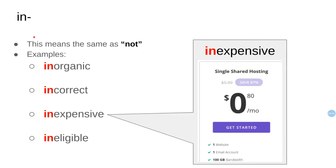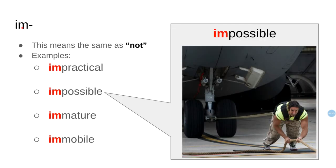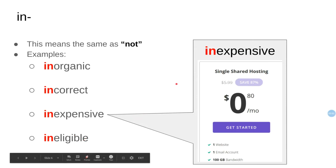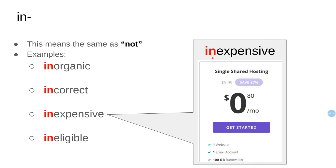Then we have 'in-.' It means the same as 'not,' like inorganic, incorrect, inexpensive, ineligible. For example, look at this — it's very cheap, 80 cents a month. It's not expensive, it is inexpensive.